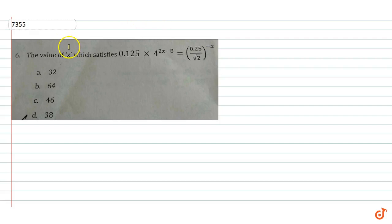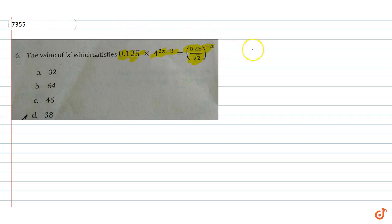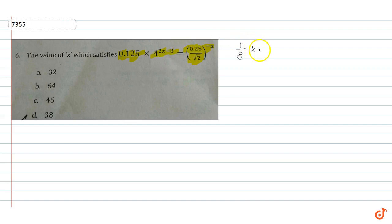In this question we want to determine the value of x which satisfies the equation 0.125 into 4 raised to power 2x minus 8 is equal to 0.25 upon root 2 raised to power minus x. Now 0.125 is actually equal to 1 by 8, so we write 1 upon 8 into 1 upon 4 raised to power 2x minus 8.